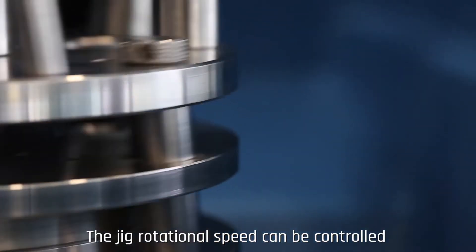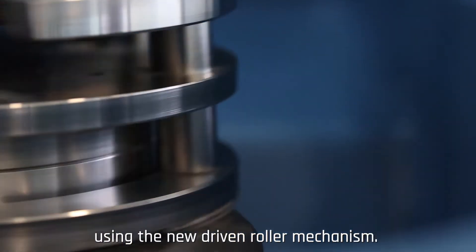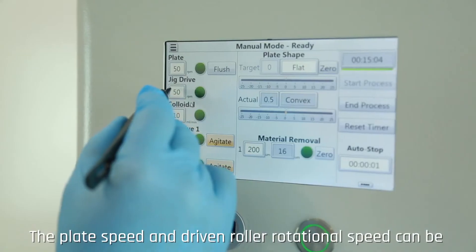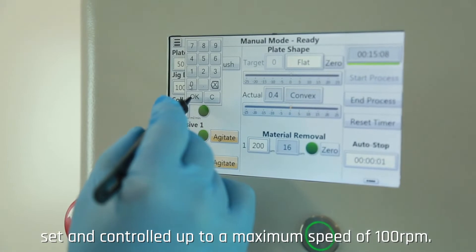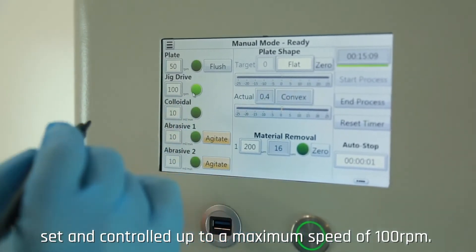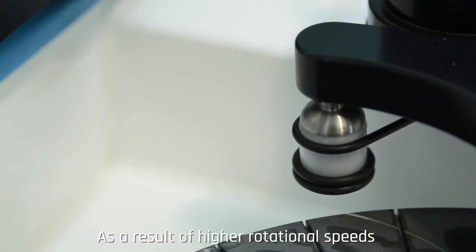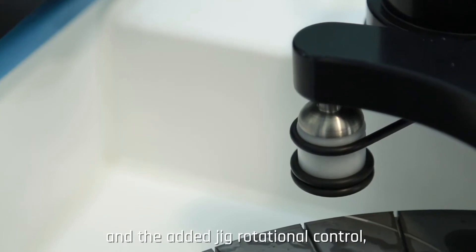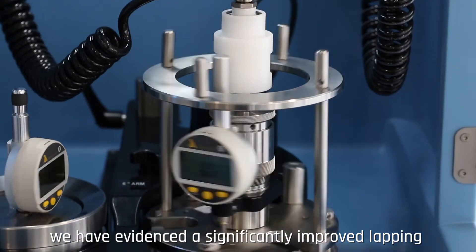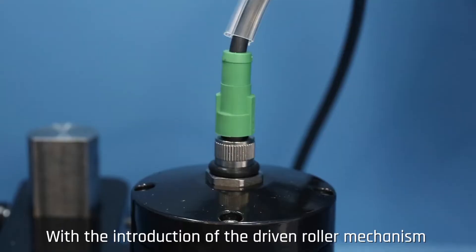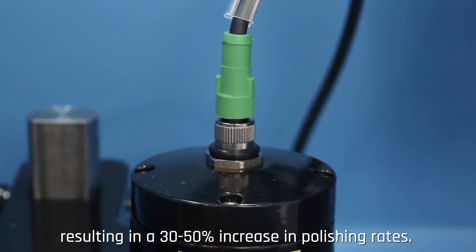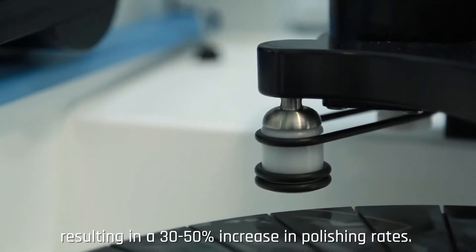The jig rotational speed can be controlled using the new driven roller mechanism. The plate speed and driven roller rotational speed can be set and controlled up to a maximum speed of 100 RPM. As a result of higher rotational speeds and the added jig rotational control we have evidenced a significantly improved lapping and polishing rate with the introduction of the driven roller mechanism resulting in a 30 to 50% increase in polishing rates.